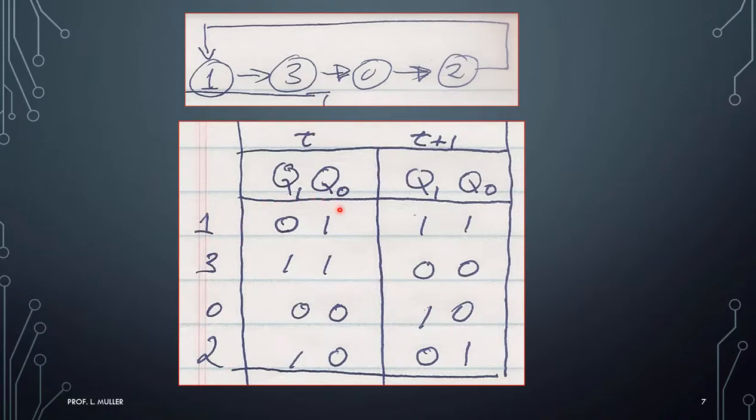So when I'm in state one, I'm going to go to three. So that means Q1 and Q0 will be one. When I'm in state three, notice I go to zero. So that means Q1 and Q0 will be zero, etc. Notice how this matches the diagram, except now it's in binary. This is my present time, and this is the future, when a clock pulse comes in.